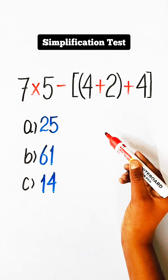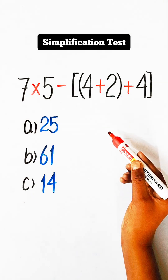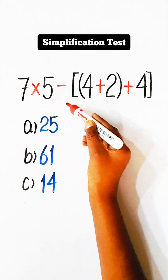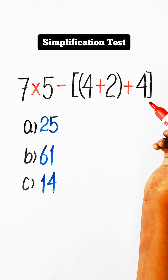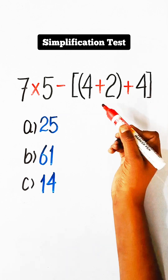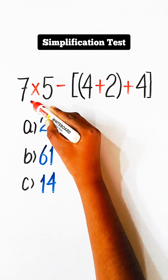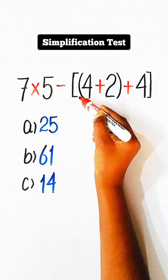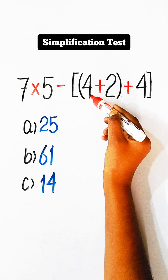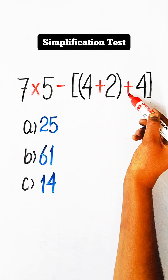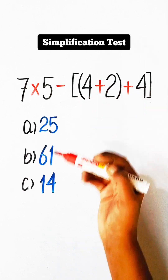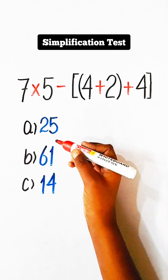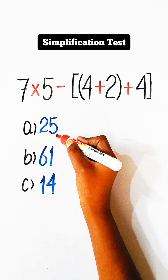Hello everyone, in this video we will solve this basic simplification question: 7 multiplied by 5 minus bracket 4 plus 2 plus 4 equals to what?